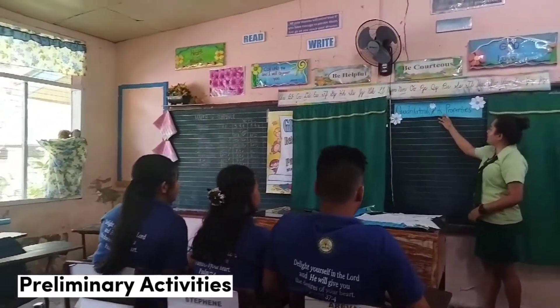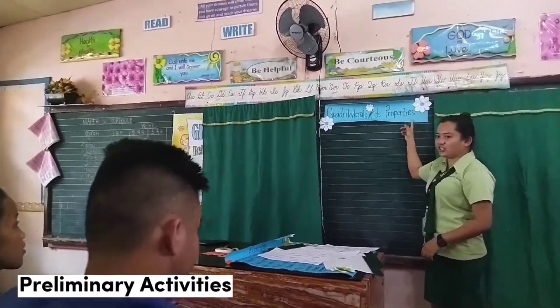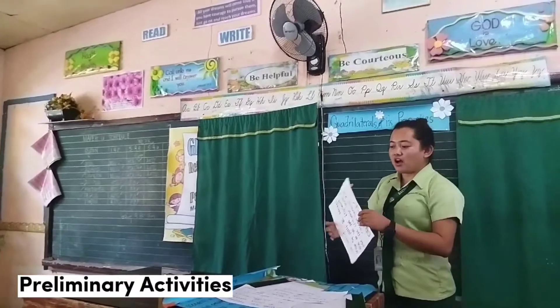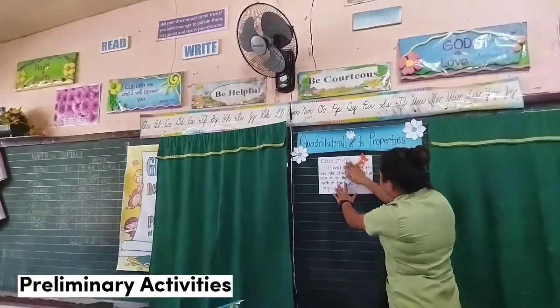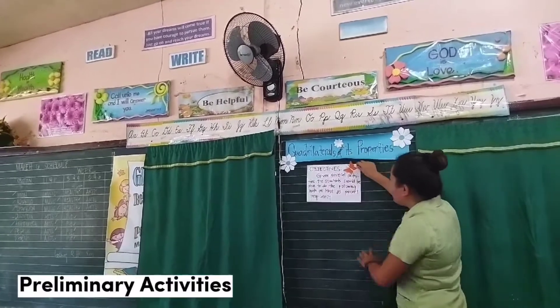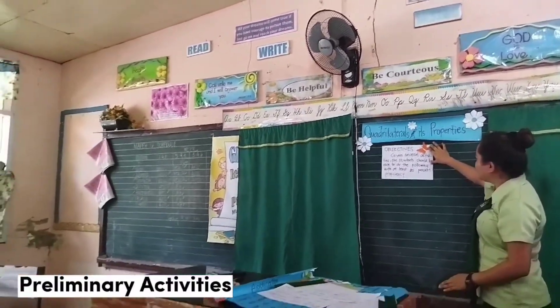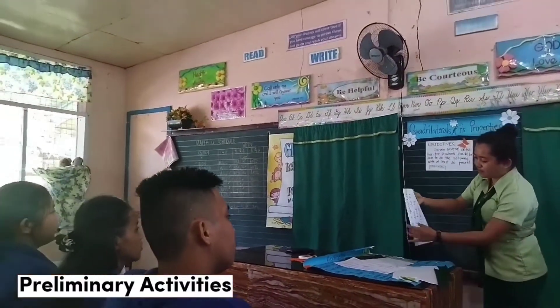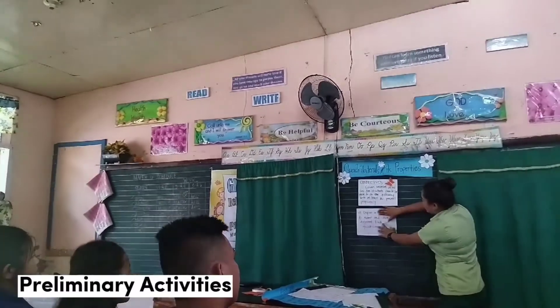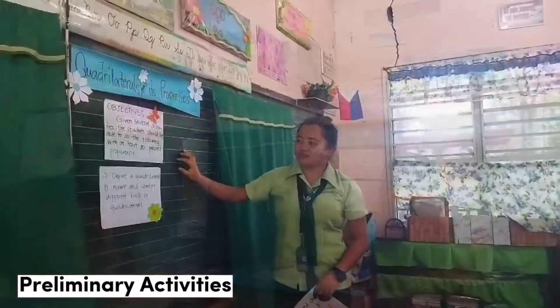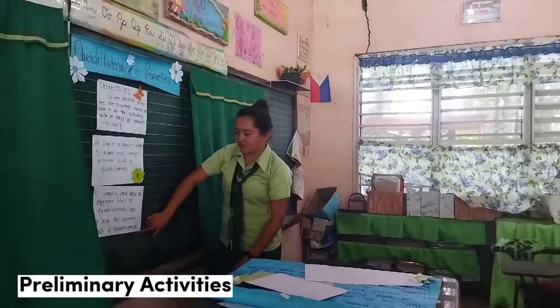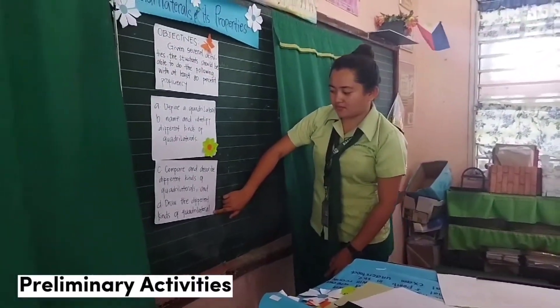Okay, class, our topic for today is all about quadrilaterals and their properties. Now, I will introduce to you our objectives. Given several activities, the students should be able to do the following with at least 80% accuracy: define quadrilaterals, name and identify different kinds of quadrilaterals, compare and describe different kinds of quadrilaterals, and draw the different kinds of quadrilaterals.